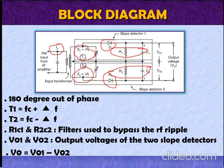V01 and V02 are the output voltages of the two slope detectors and the final output voltage V0 is obtained by taking subtraction of the individual output voltages V01 and V02. Therefore, V0 equals to V01 minus V02.